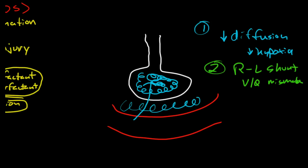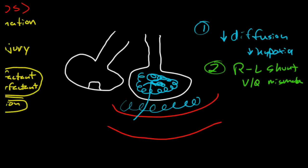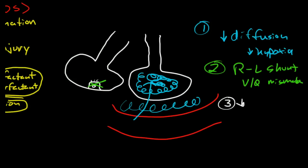Okay, and then the alveoli that aren't completely filled with fluid are going to have damage to their type 2 alveolar cells, and this is going to cause a decrease in surfactant production. And decreased surfactant production is going to cause decreased compliance, so the lungs are going to get stiff and difficult to ventilate.